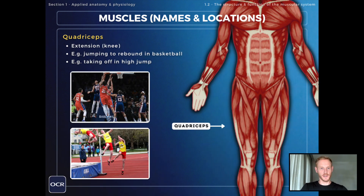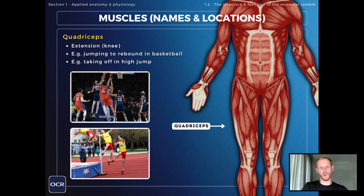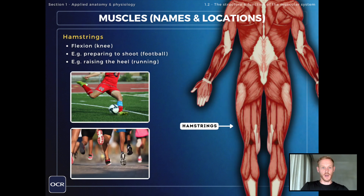Next we have the quadriceps, which is a group of muscles on the front of the thigh. When the quadriceps contract they extend or straighten the leg at the knee joint. The best examples involve jumping, such as jumping to rebound in basketball or taking off in high jump.